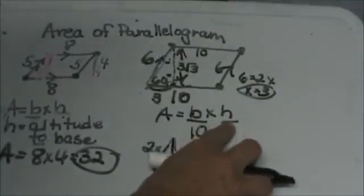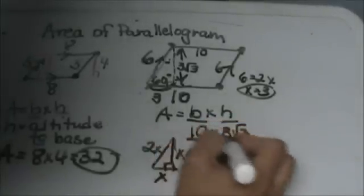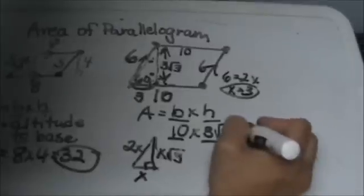Now I can use that for my height. So I'll plug it in here, 3 square root of 3, and to multiply 10 times 3 square root of 3, remember the rules.